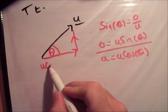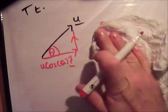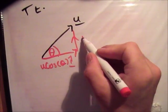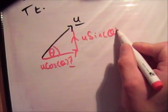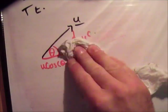So this one here is u cos theta i hat. And this one here is equal to u sin theta j hat, like so. Now I did that very quickly, because it's something I'm sure you're sick to death of at this stage.